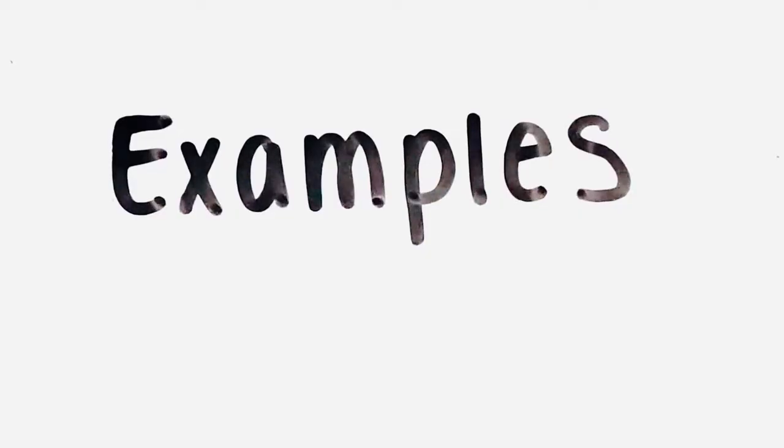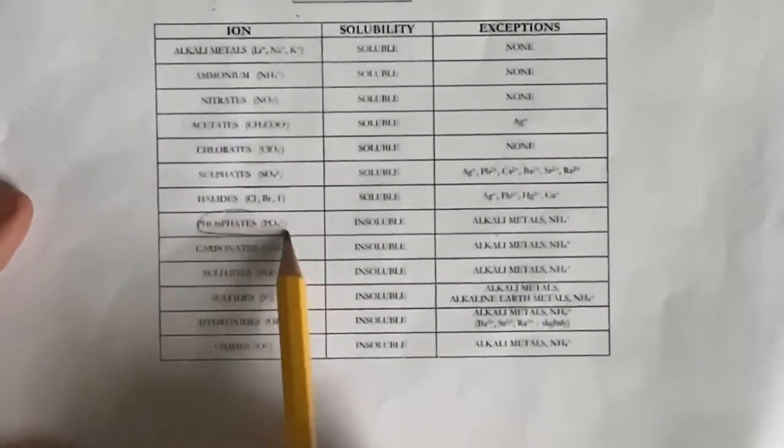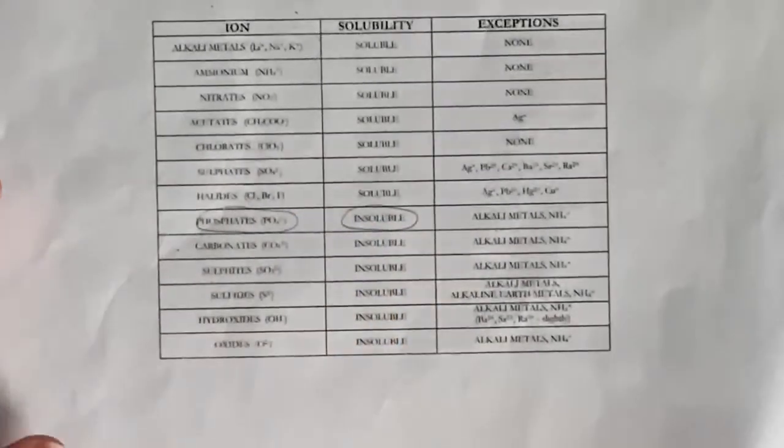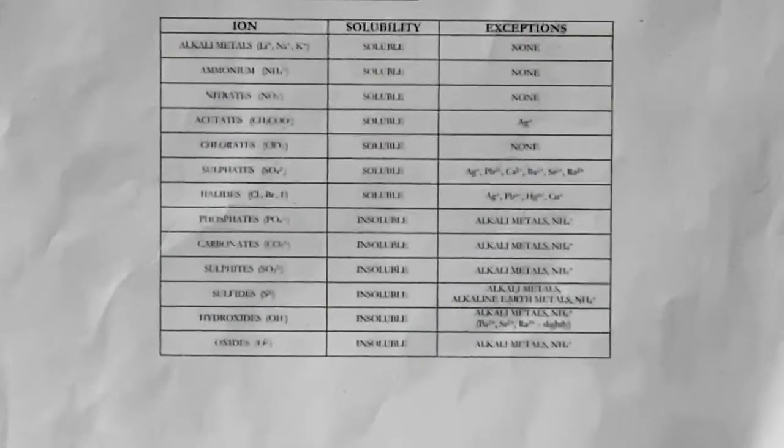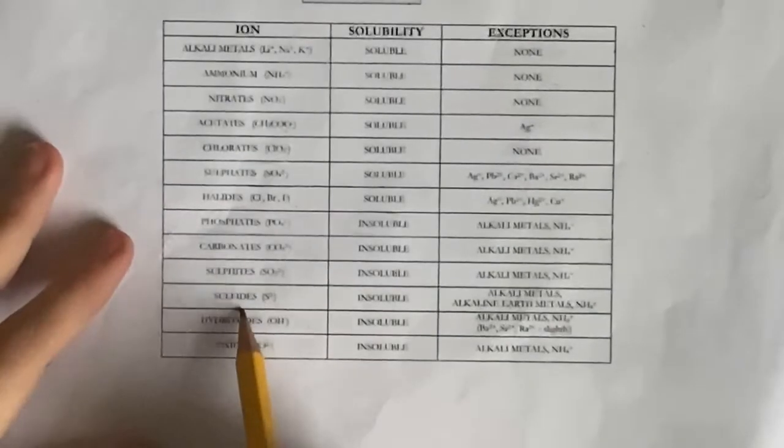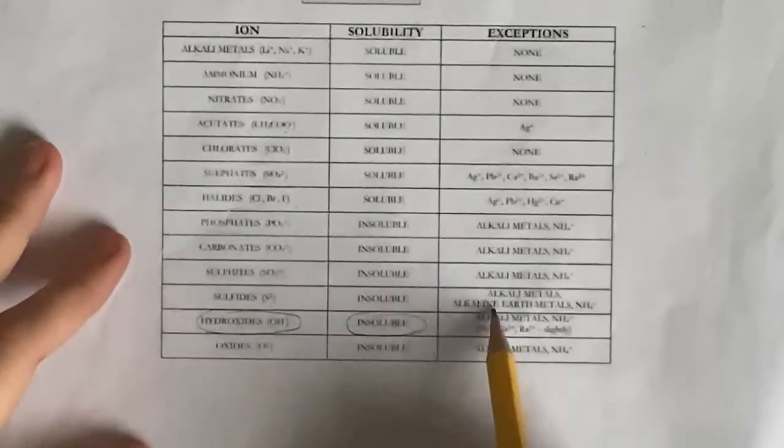Now, let's look at some examples in the insoluble section to see what their state would be. Calcium phosphate would be a solid because phosphates are insoluble and calcium is not found in the exceptions. Sodium hydroxide would be aqueous because hydroxides are insoluble. However, alkali metals are exceptions and sodium is part of the alkali metals.